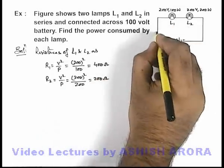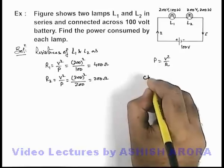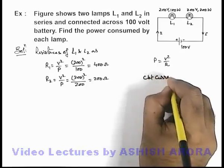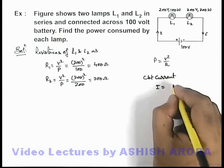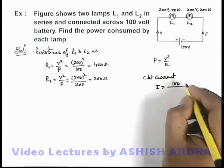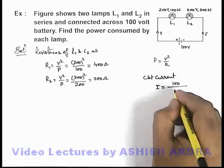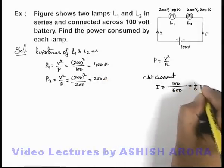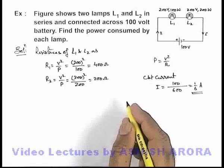Now if we know their resistances, we can easily find out the current flowing in the circuit. So here, circuit current we can calculate by using Ohm's law as I equals V by R. The potential difference applied is 100, and the total resistance in series will be 400 plus 200, that is 600. That'll be 1 by 6 ampere. This is the current flowing in the circuit.